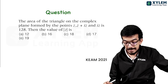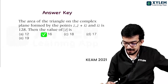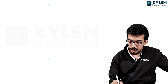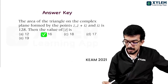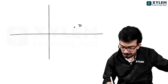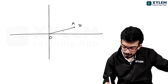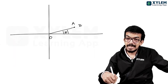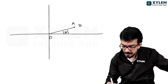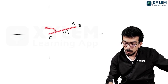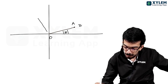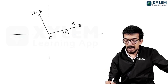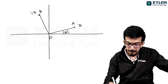Next interesting question: the area of the triangle formed by the points Z, Z plus iZ, and iZ on the complex plane is 128. Find the modulus of Z. We approach this geometrically. The side length of this triangle relates to the modulus of Z.